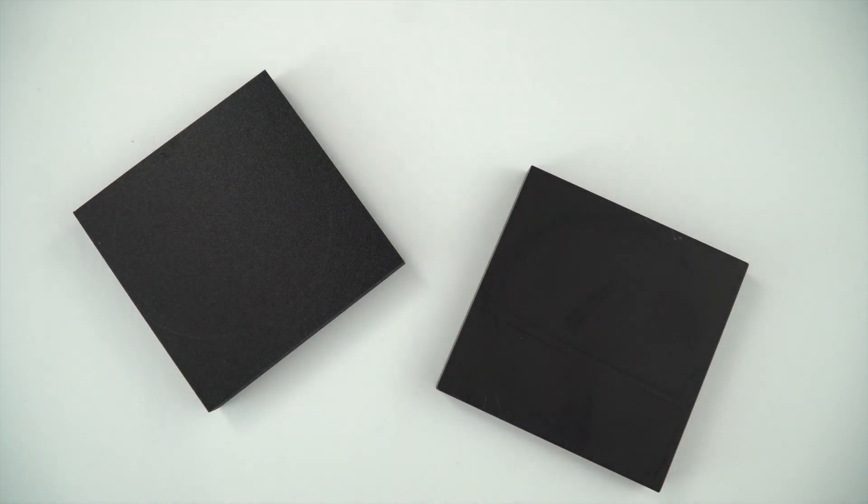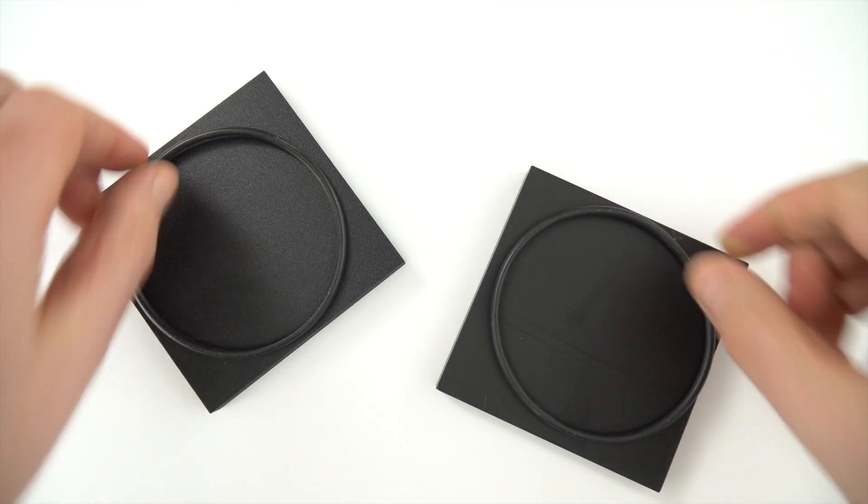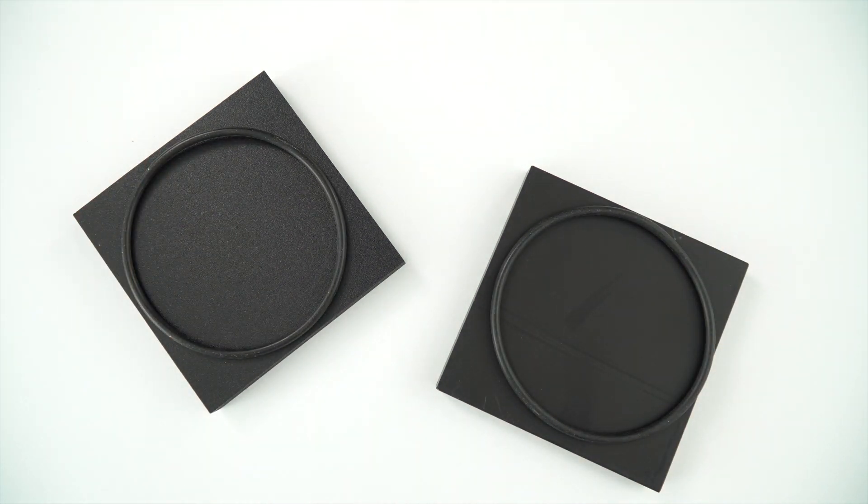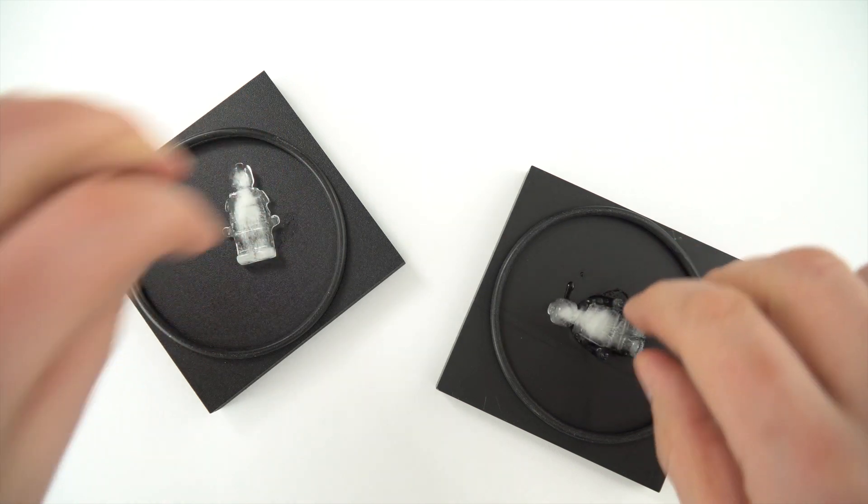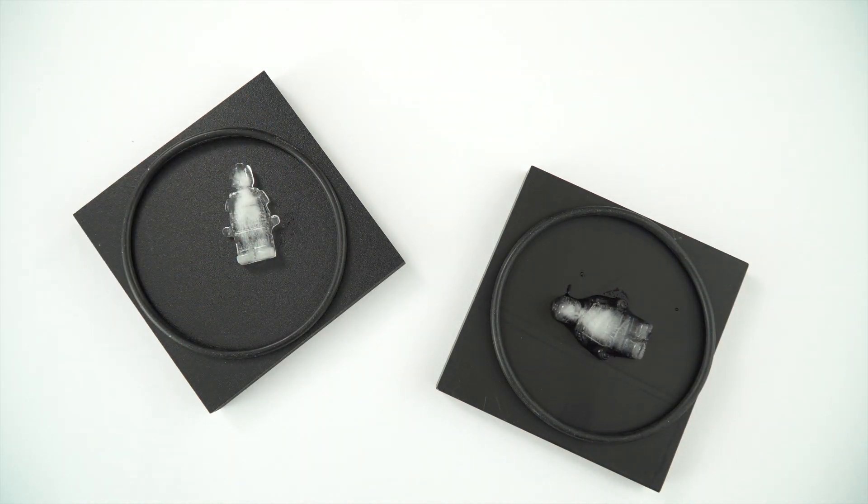So, I have two squares of material, a couple of rubber rings to stop things falling off the edge, and then I've got a couple of ice cubes, so let's see what happens.